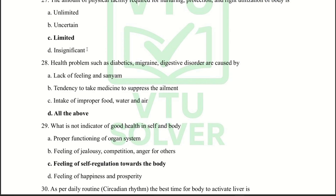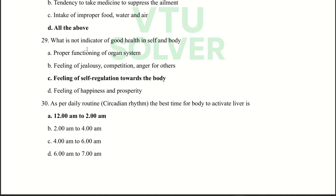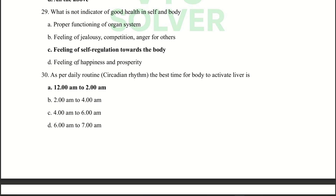Next question: Health problems such as diabetes, migraines, and digestive disorders are caused by all of the above. Next question: What is not an indicator of good health in self and body? Answer: Feeling of self-regulation towards the body.